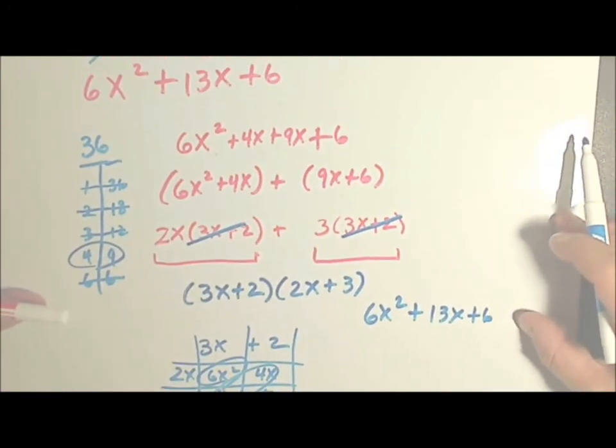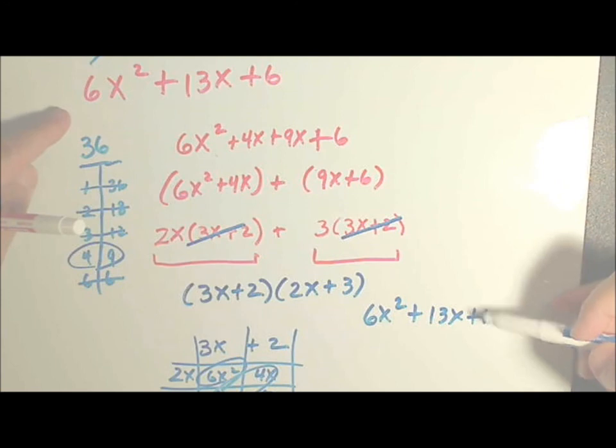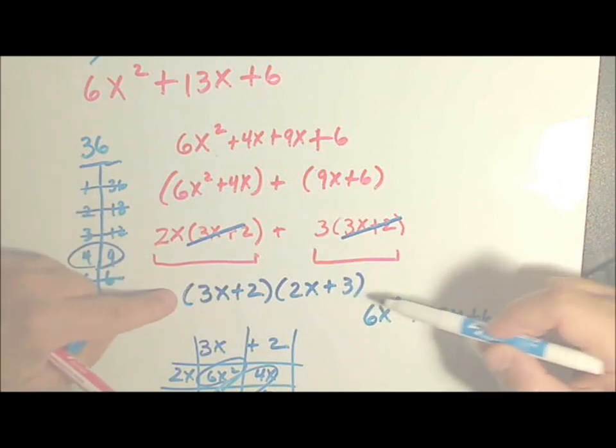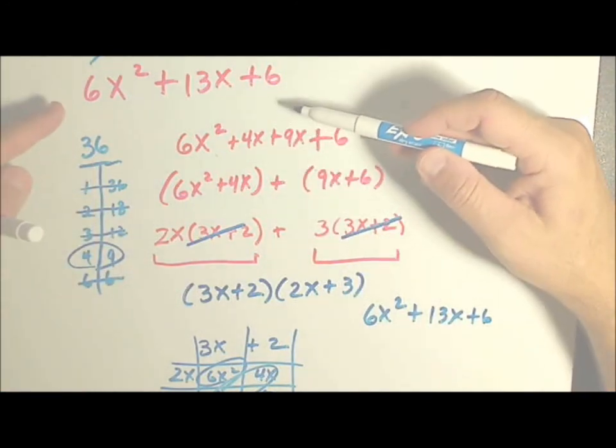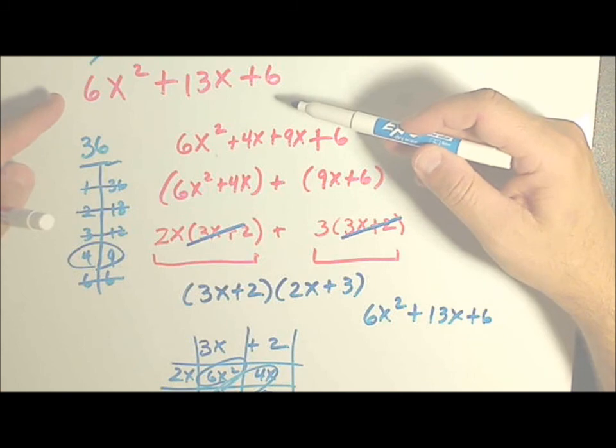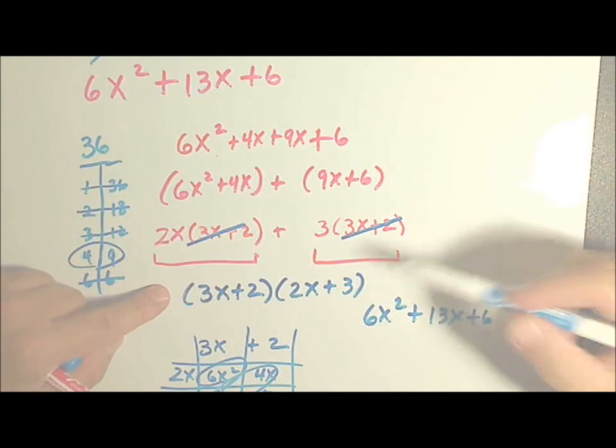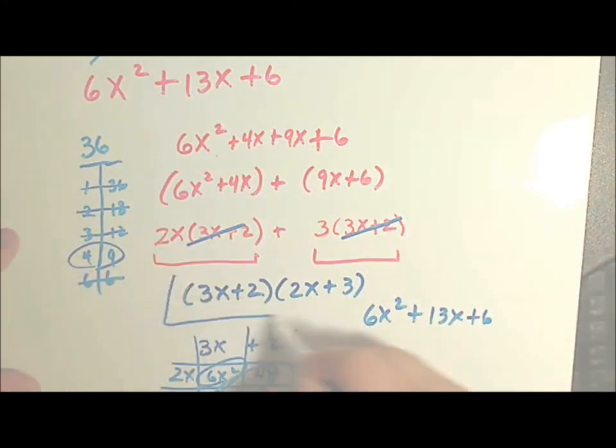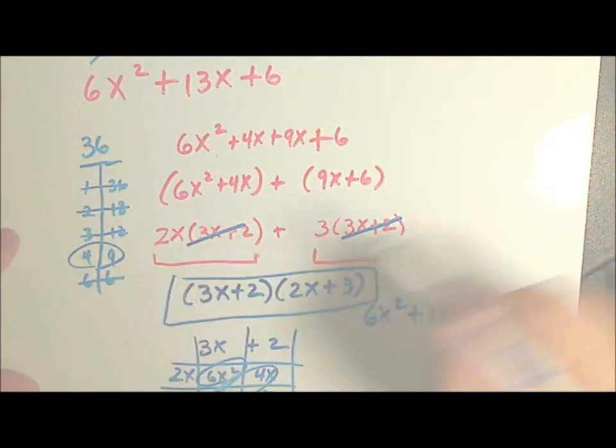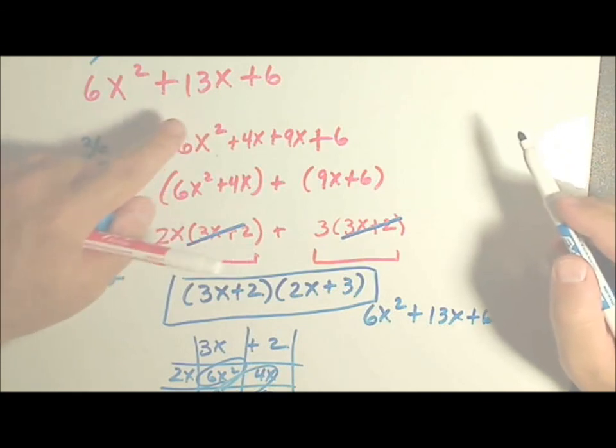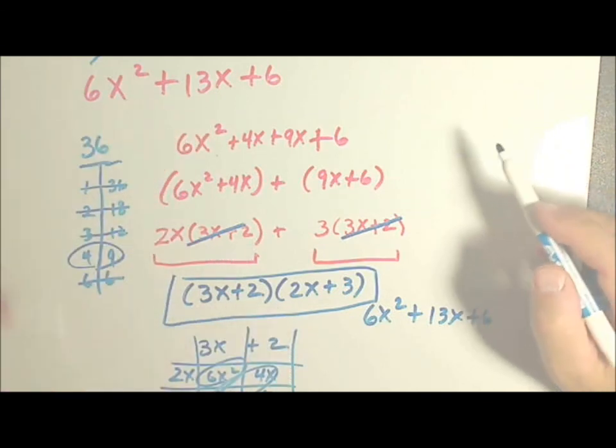So this is the result of multiplying my factored binomials. Is it the same? Yes, it is. So these two binomials multiplied bring me back to the trinomial. This trinomial is factored only by these two binomials multiplied. My answer for factoring this trinomial is these two binomials.